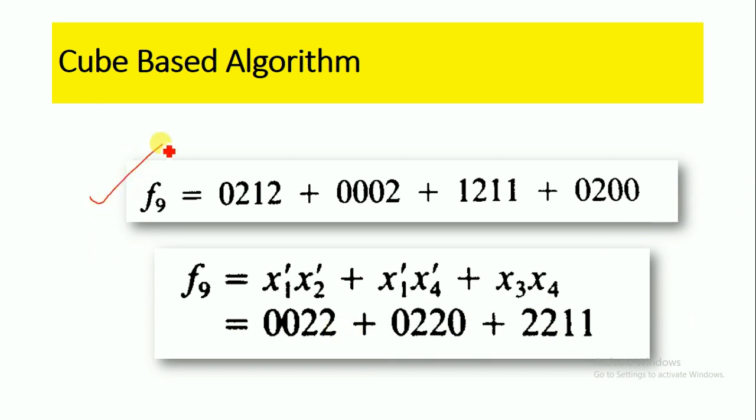The actual function f9 is given as 0212, 0002, 1211, and 0200. This function f9 is converted into a three-cube function. This is about the cube-based algorithm.